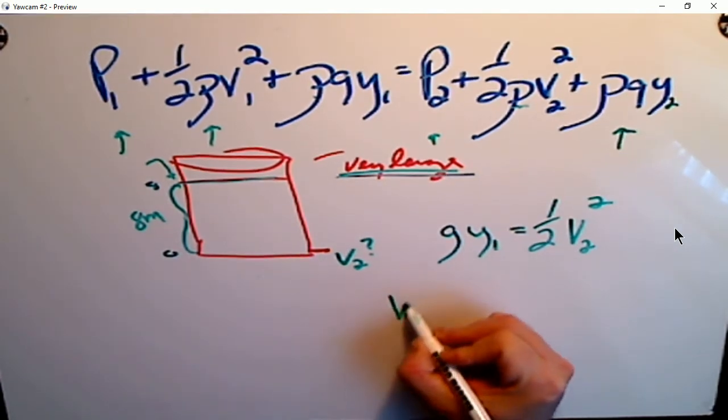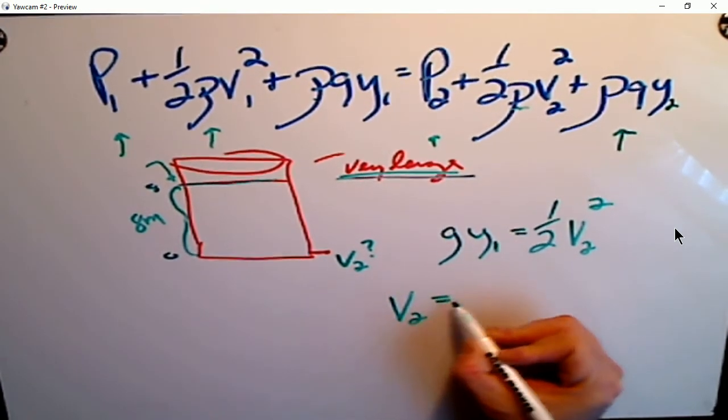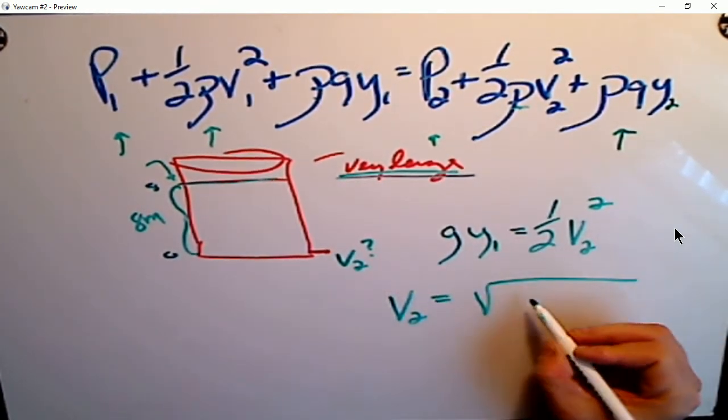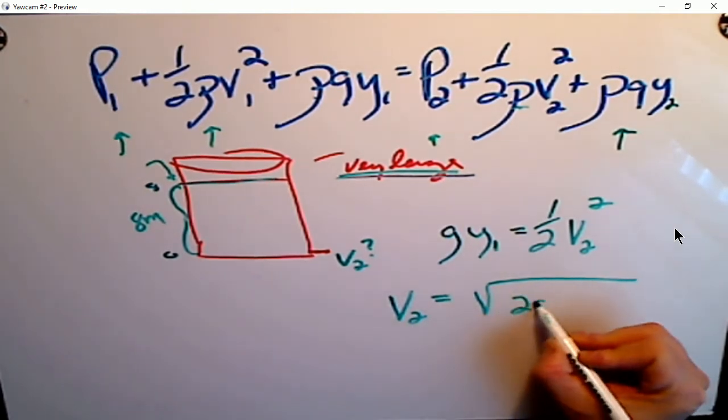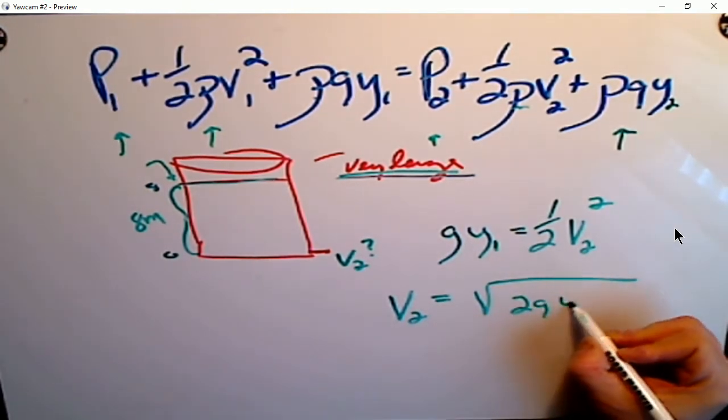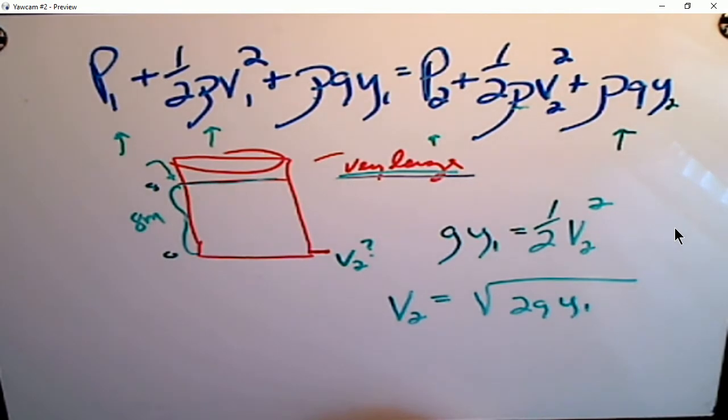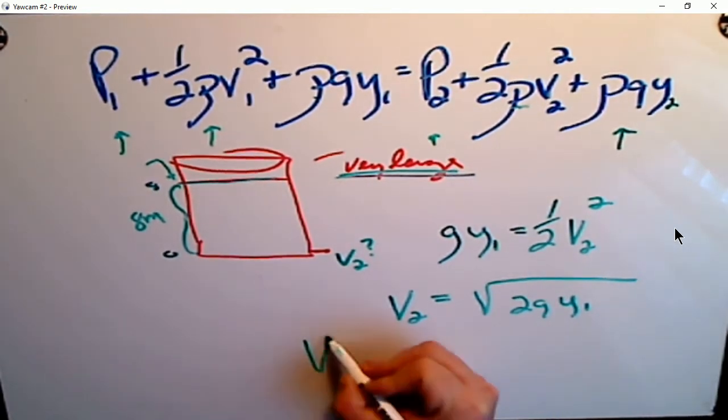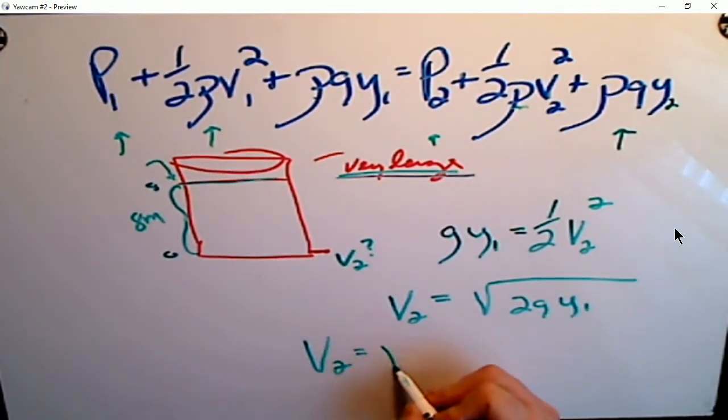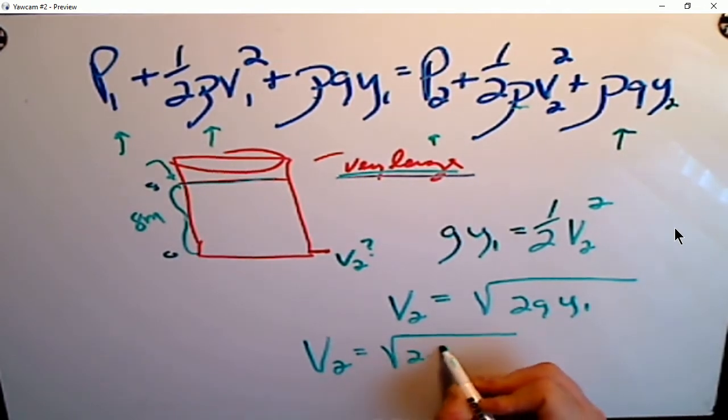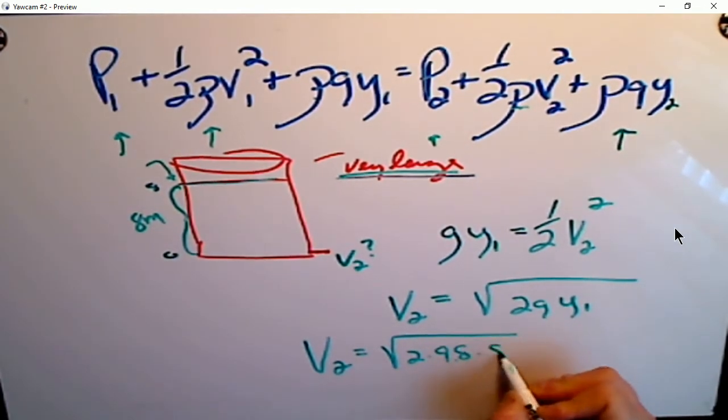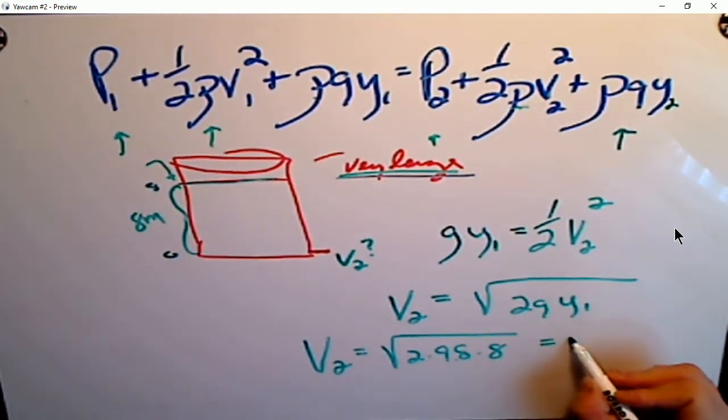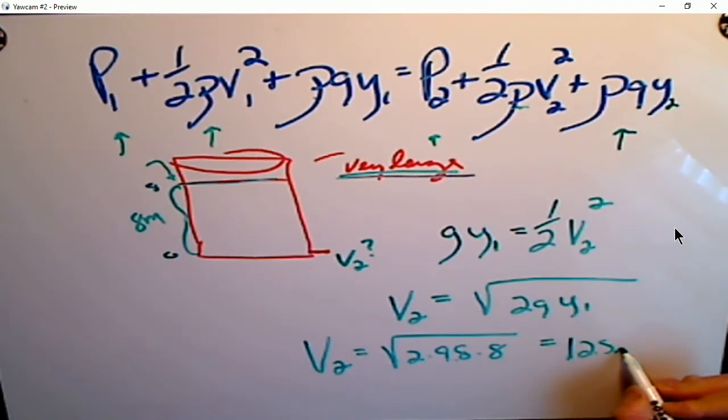And on the other side, all we have is one-half v2 squared. And then this of course gets down to—you can write it in terms of velocity—and in this example, about 12.5 meters per second.